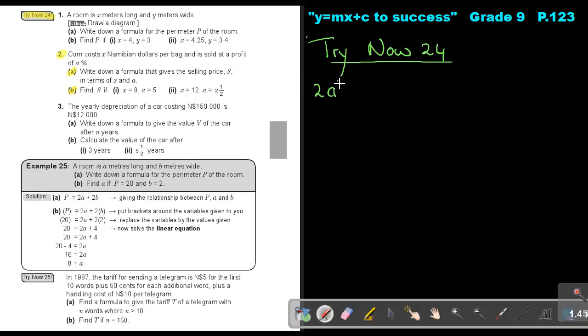Number 2A. Corn costs X Namibian dollars per bag and is sold at a profit of A percent. So it's increased with A percent. Can you remember how we do increase with a percentage? We take the percentage, say it was 4%, put it over 100, then multiply with the value, the cost price. And then if we increase, we add it to the cost price.